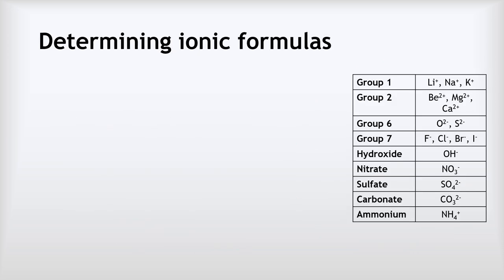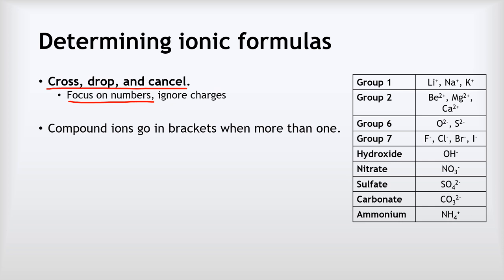Now we're going to look at some practical examples of how we actually determine the formulas of real-life ionic compounds. We're going to use a technique called cross, drop, and cancel to do this. When we do this, we're going to be focusing on the numbers of the charges: + would be 1, 2+ would be 2, - would be 1, 2- would be 2, and so on. Before we start, it's worth bearing this in mind: compound ions go in brackets only when there is more than one of them.